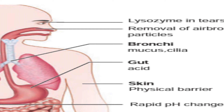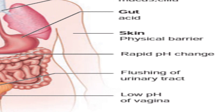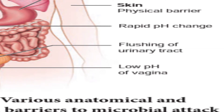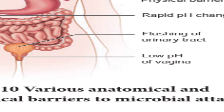In the gut, acid kills any microorganism that enters. The skin acts as a physical barrier — if anything attacks your skin, there itself the infectious agent is attacked and killed. Rapid pH changes in the stomach also kill microorganisms. Flushing of the urinary tract flushes out agents, and even the low pH of the vagina also attacks microorganisms. These are all the physical barriers that attack microorganisms.